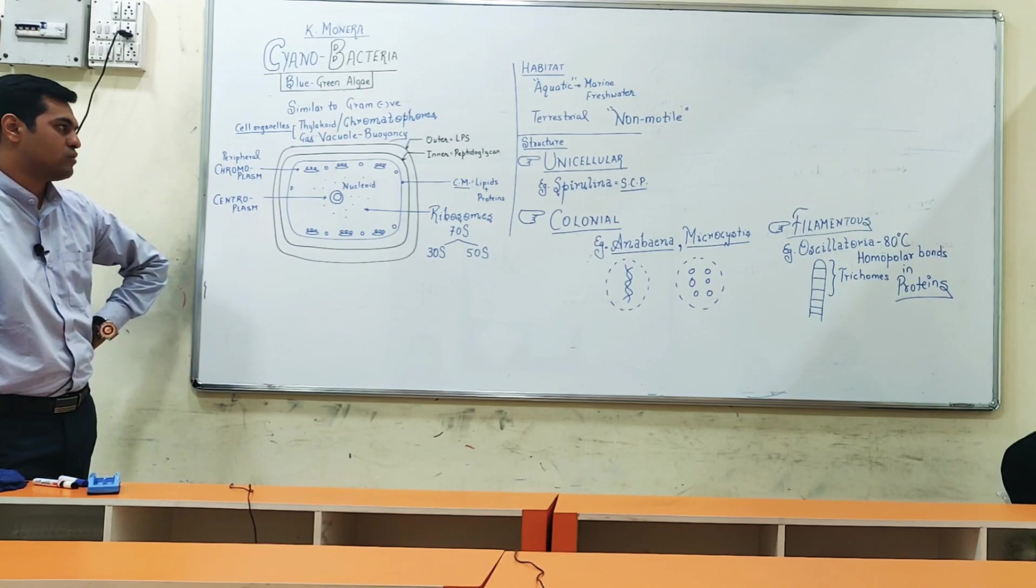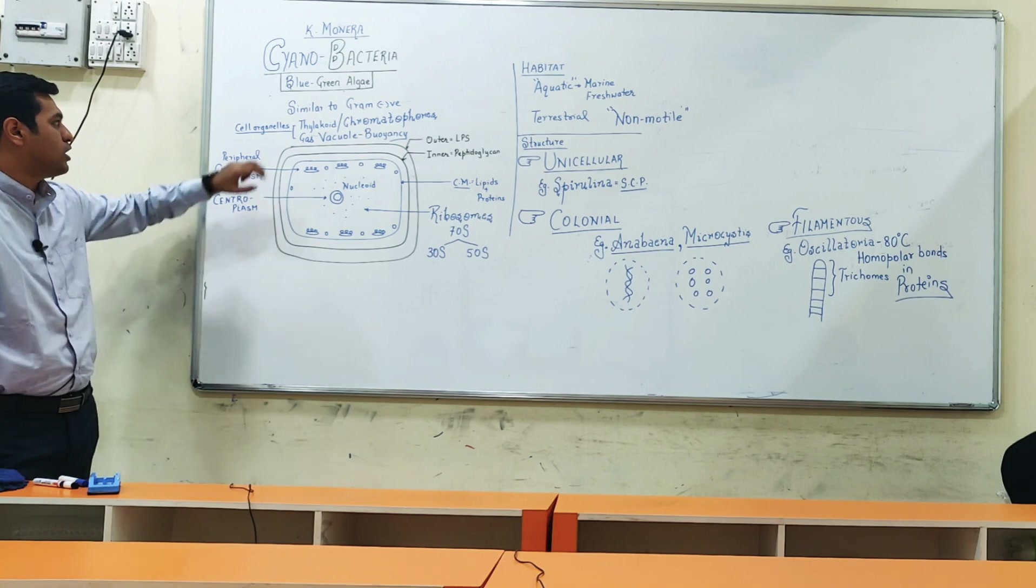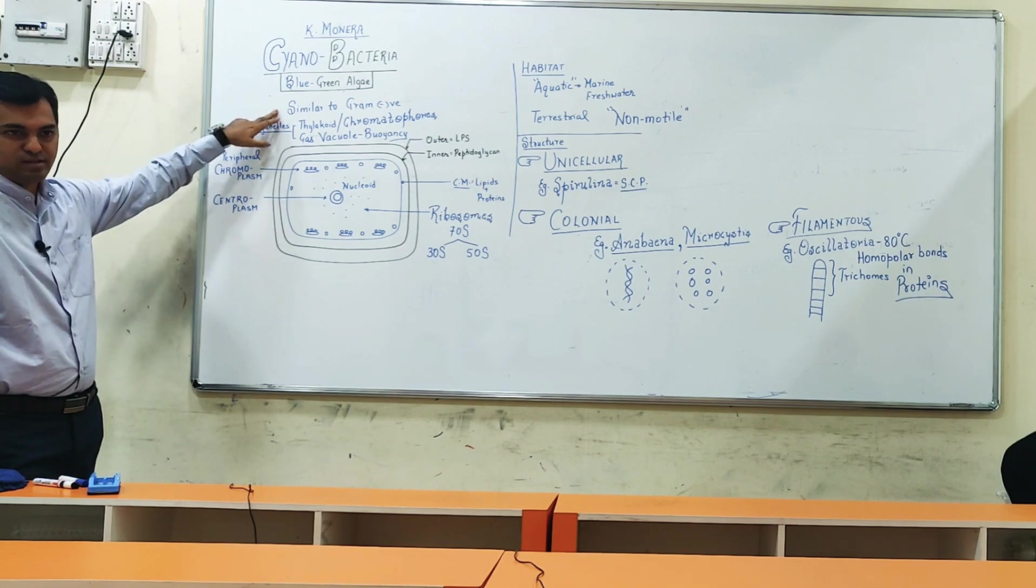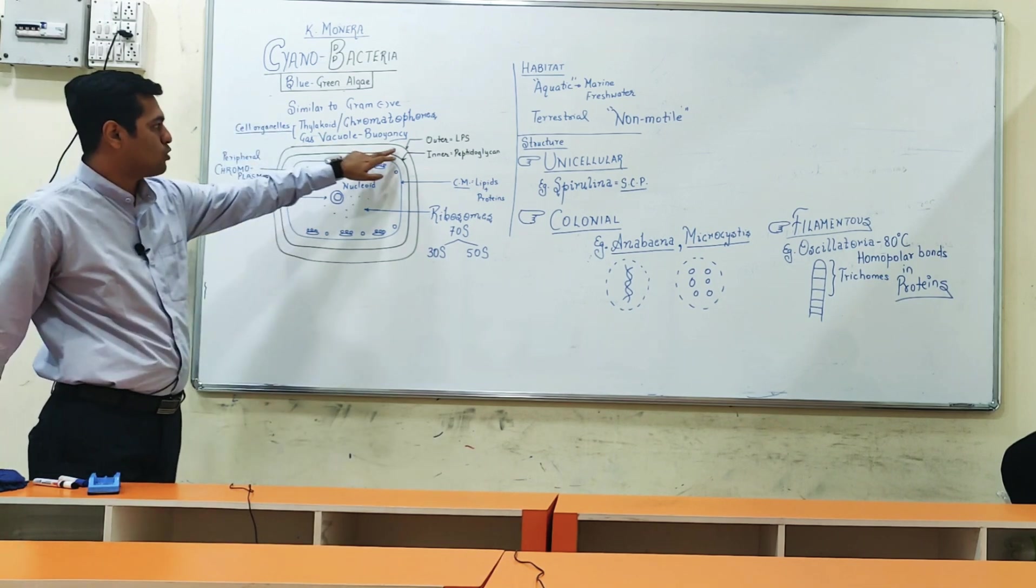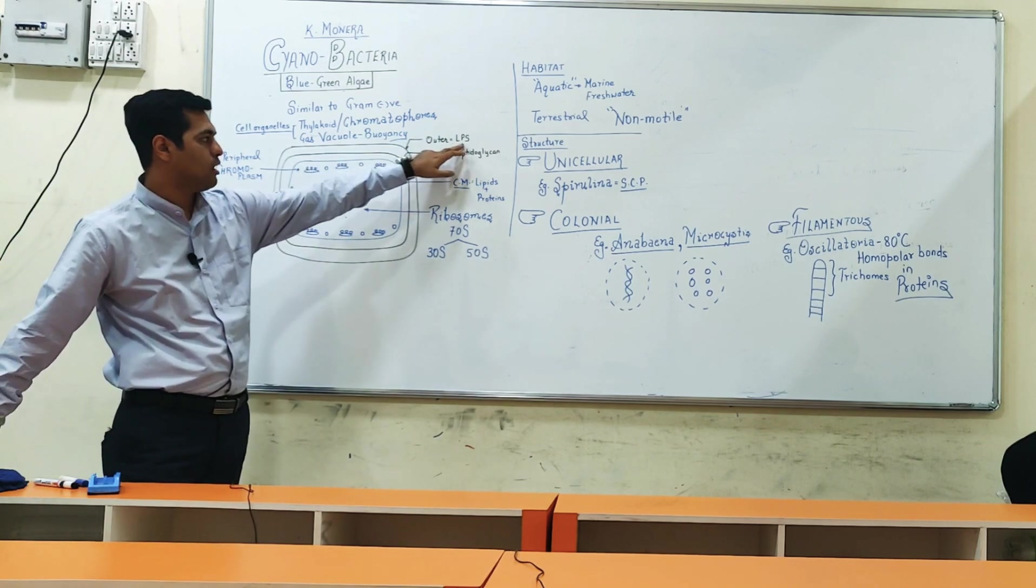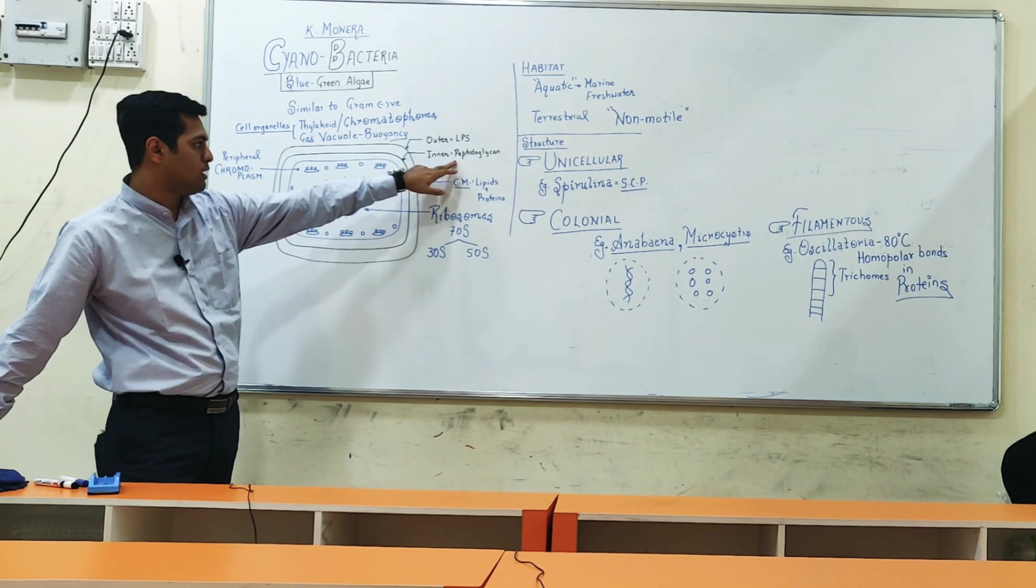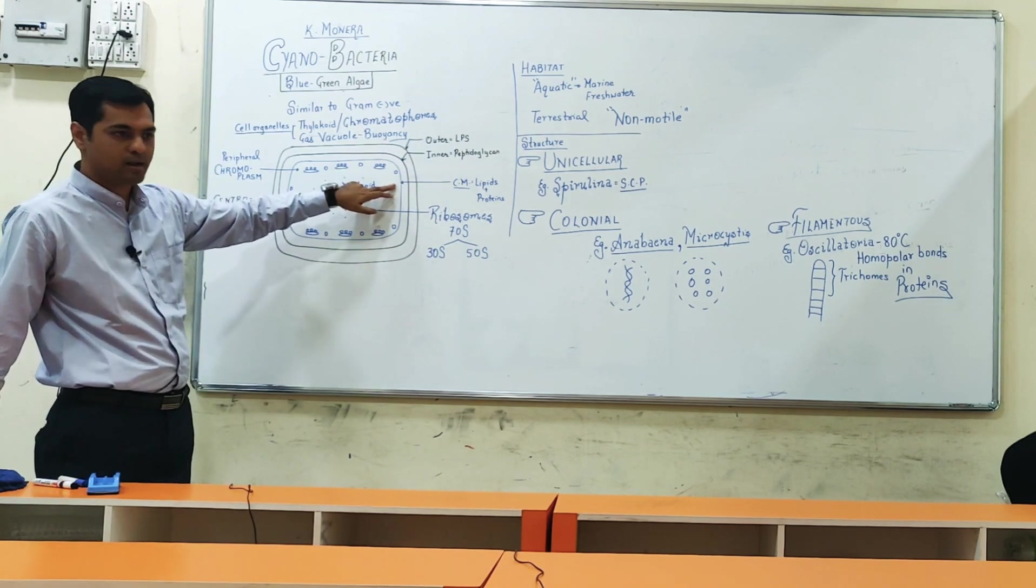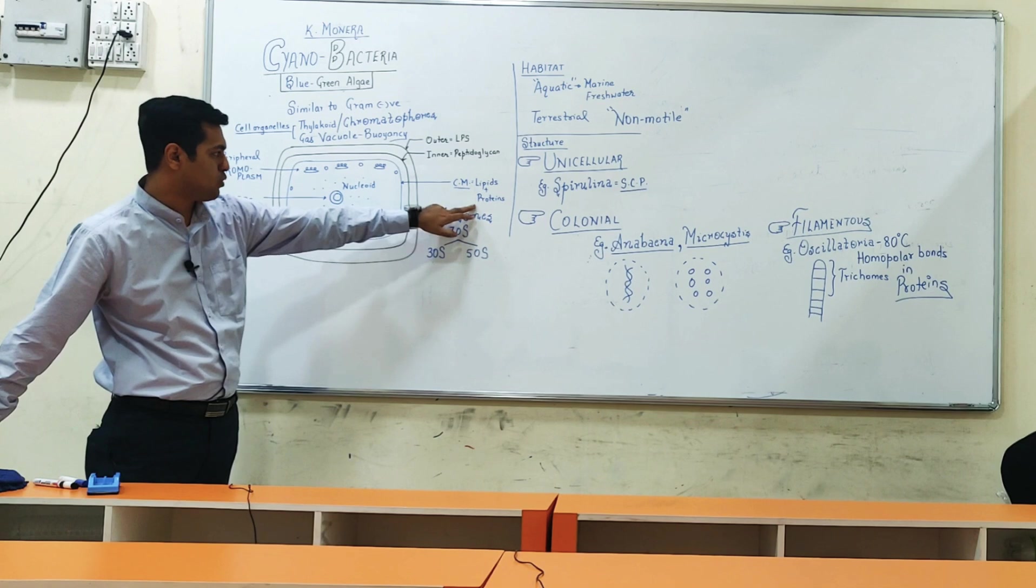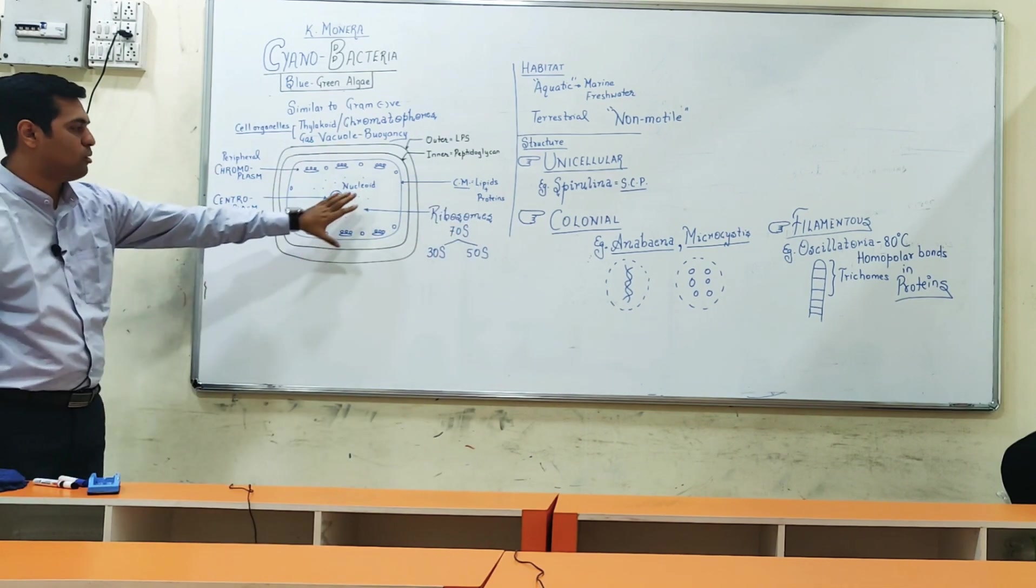So what we have discussed is the structure of cyanobacteria, which is similar to gram-negative organisms. It's composed of an outer cell wall made up of lipopolysaccharide, an inner cell wall composed of peptidoglycan, followed by a cell membrane similar to eubacteria made up of lipids and proteins. The cytoplasm can be classified into peripheral...